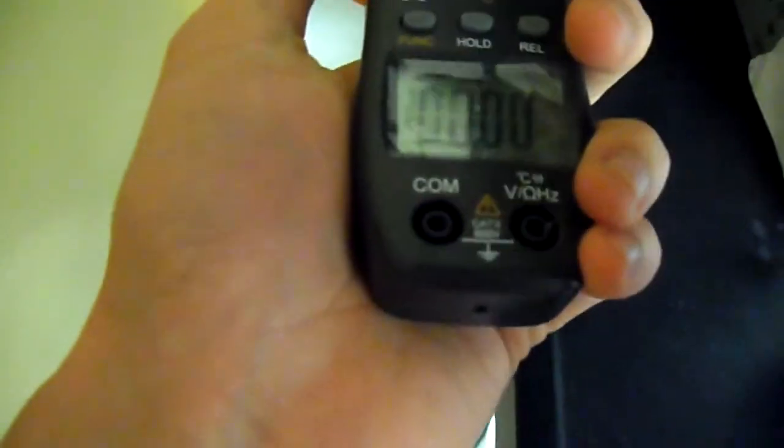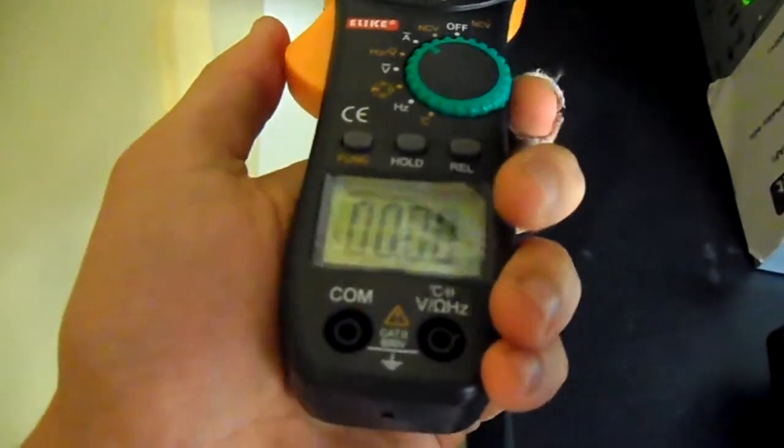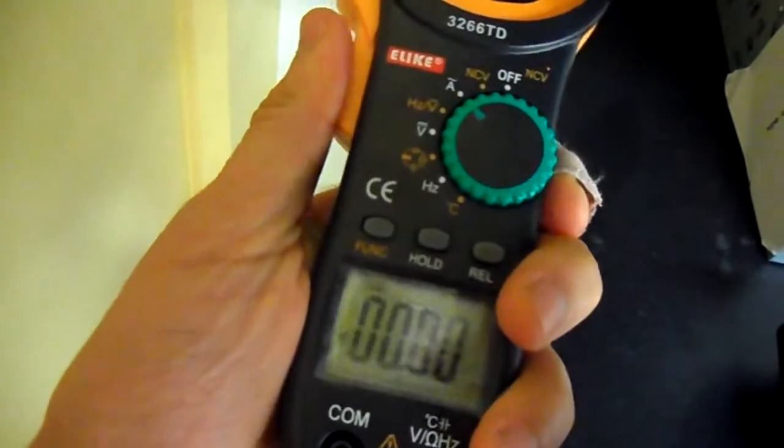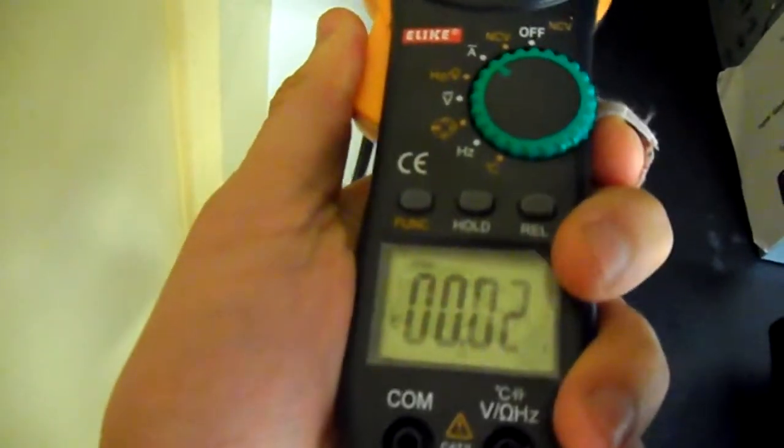And again, if you were to clamp around both, same amplitudes, opposite signs, you see nothing. So if you're measuring with an amp clamp, don't make that mistake.